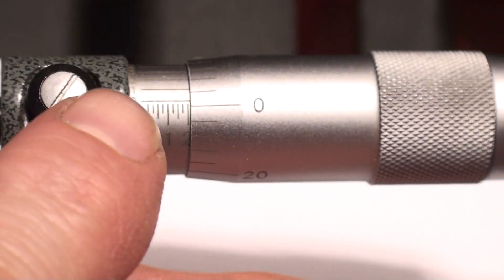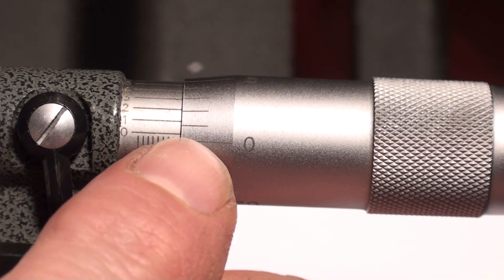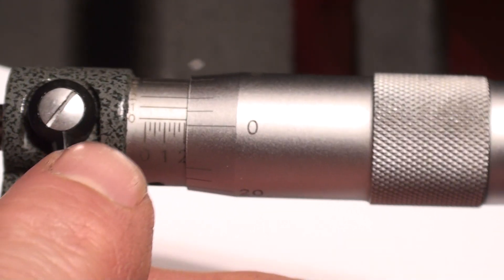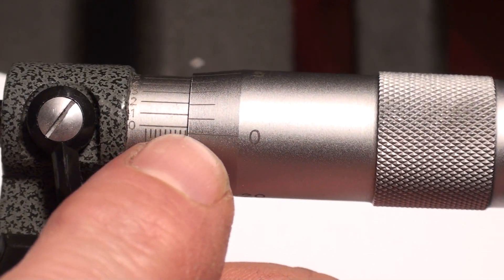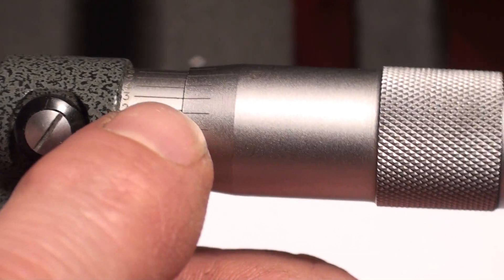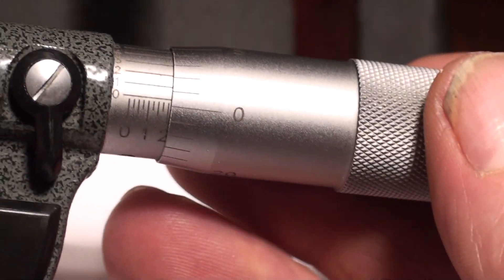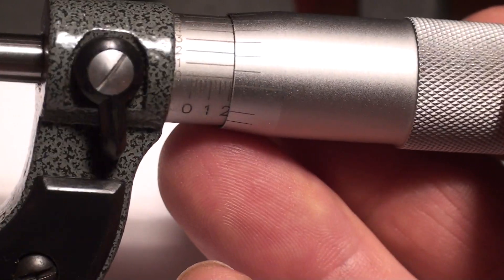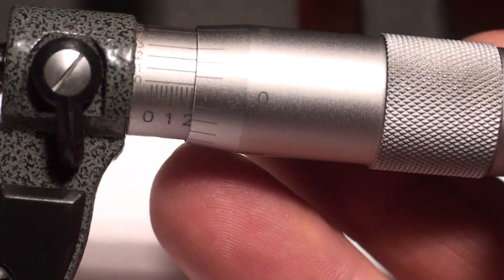So it would be point two zero zero five. Two zero zero - doesn't make it to the first one, and then the five lines up. Point two zero zero five. That's how you read a micrometer to the ten-thousandths. Quite simple once you get the hang of it. Just practice.